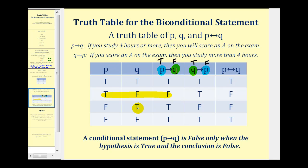And therefore in this row, if q then p is false and everything else is true.